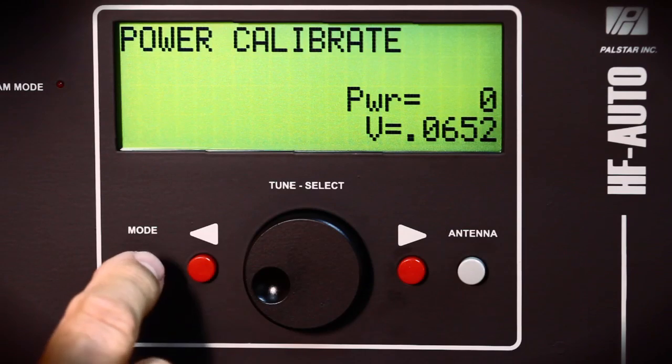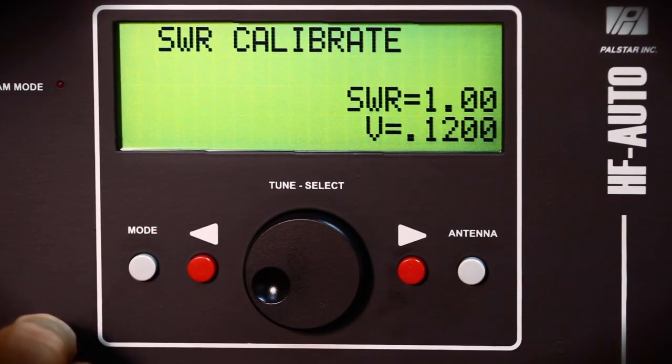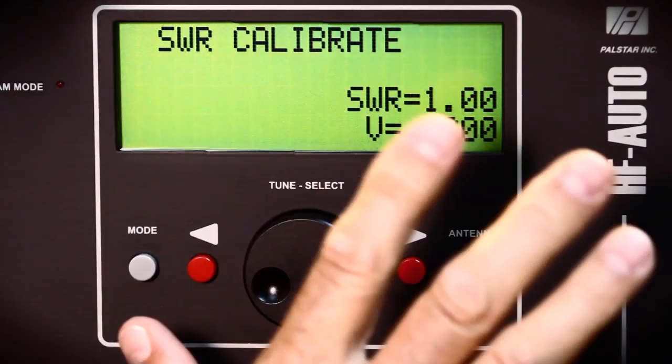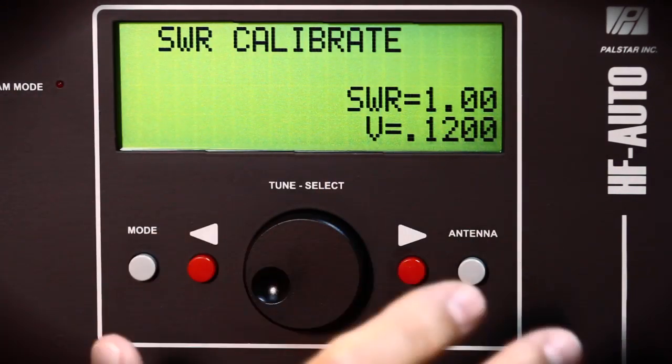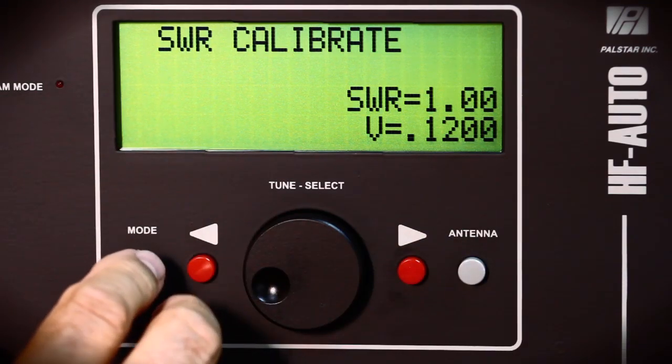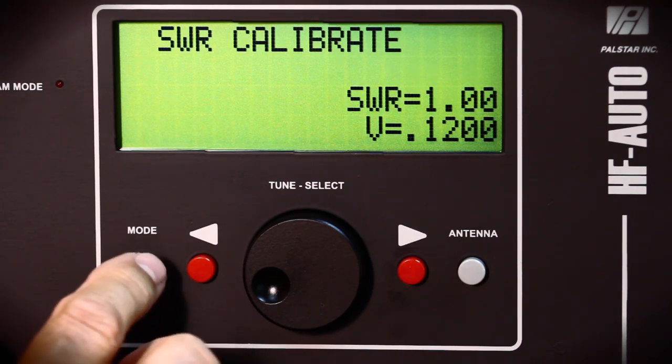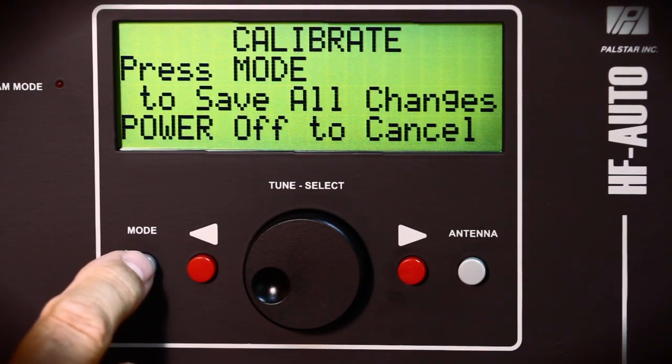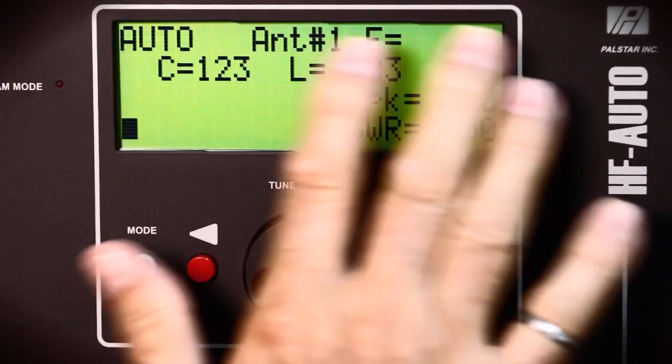So when you're finished, you push the mode button again. And it'll read SWR. But we're not going to show you how to do SWR because you need a very accurate dummy load. The PALSTAR uses a bird oil filled dummy load for this purpose. So it says calibrate, and then you're back into auto.